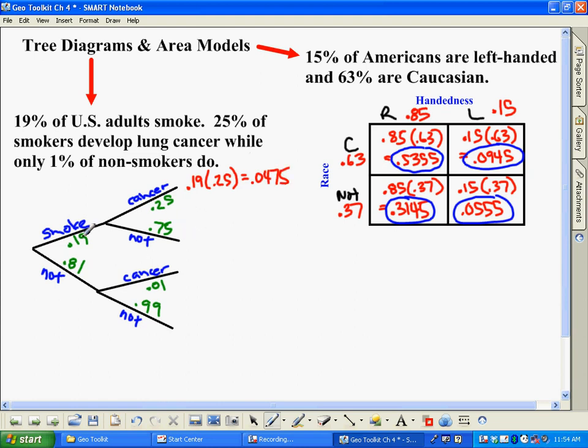Likewise here, 0.19 times 0.75. And when you multiply these together, you get 0.1425.